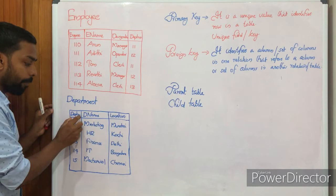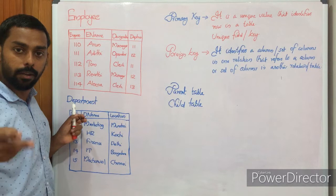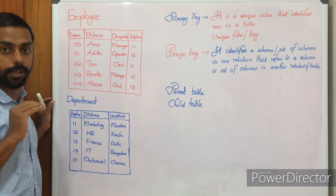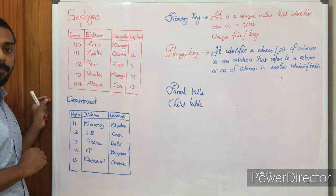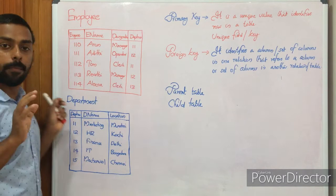Department name can be duplicated — you can have the same department name. Location can also be the same — you can have two Mumbai, two Delhi. But department number must be distinct and unique, with no duplication. In Employee, employee number is the primary key, and in Department, department number is the primary key. I hope the concept of primary key is clear. Now we are heading to foreign key.